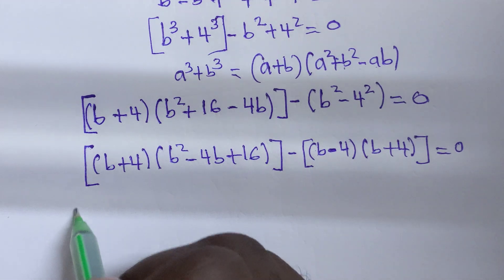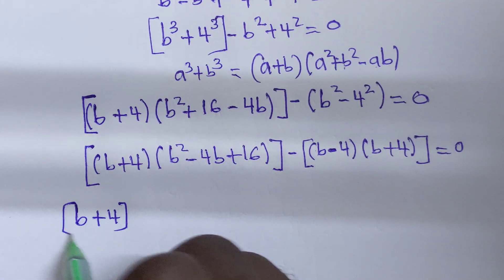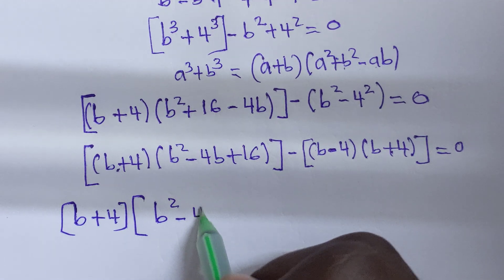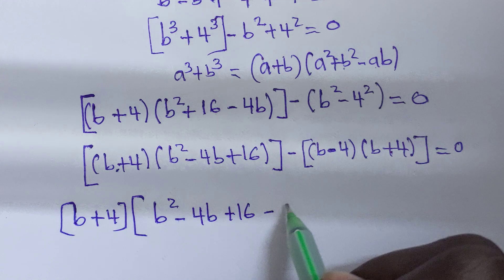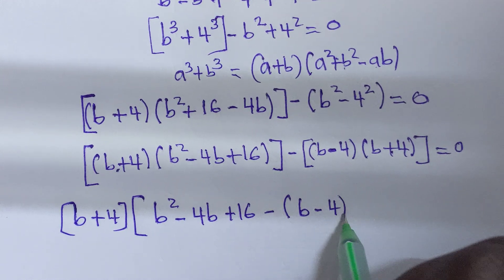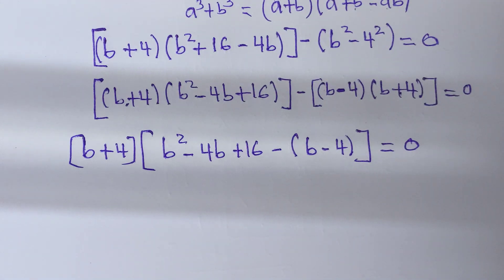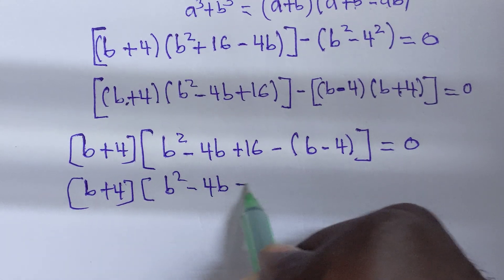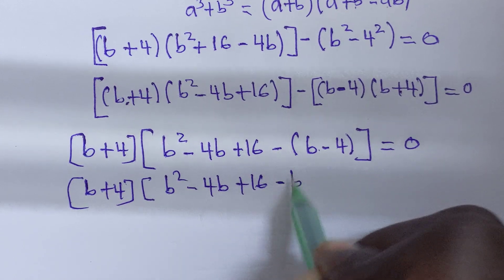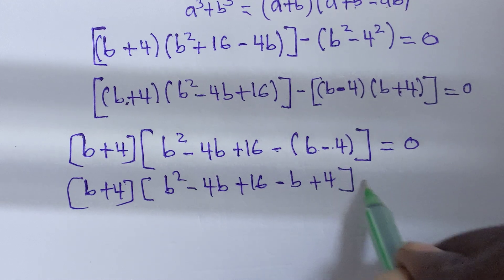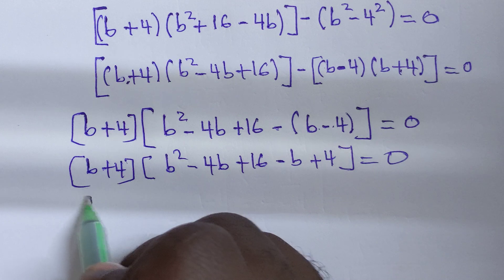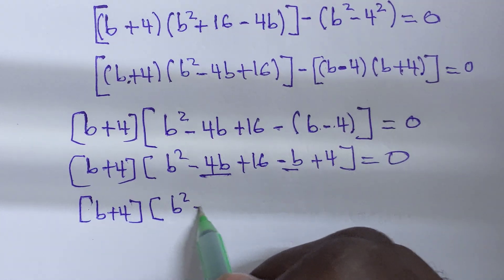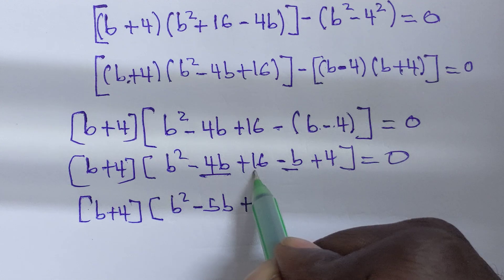Now we factorize out (b plus 4), since it appears in both terms. We get (b plus 4) times (b squared minus 4b plus 16 minus (b minus 4)) equals 0. Simplifying inside: b squared minus 4b plus 16 minus b plus 4 gives b squared minus 5b plus 20. So one solution is b plus 4 equals 0, giving b equals negative 4.